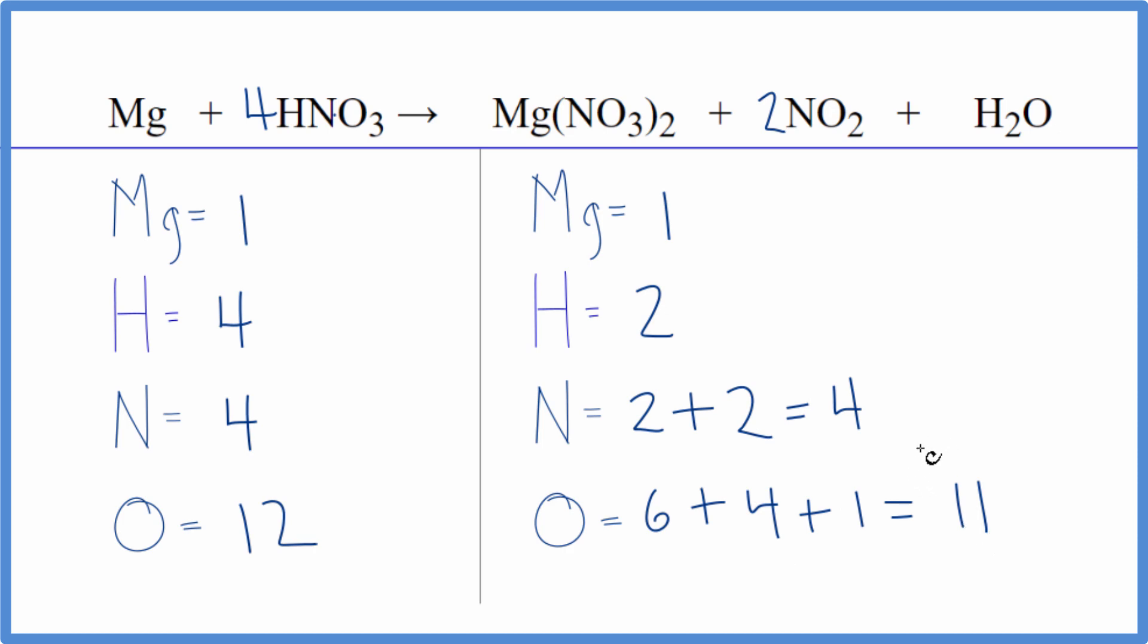Okay, at this point, why don't we balance the hydrogens, and maybe that'll balance the oxygens as well. Let's see. I'll put a two in front of the water, two times two, that gives us four. Hydrogen atoms are balanced.